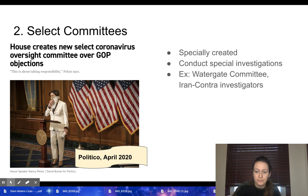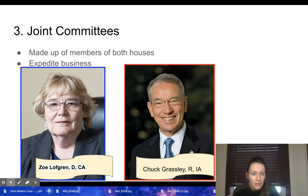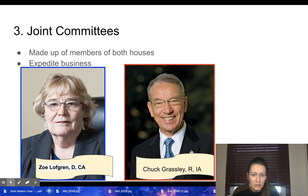We also have joint committees. They are made up of members from both houses for the purpose of coordinating investigations or special studies and to expedite business between the houses. For example, Zoe Loughran, a Democrat from California, heads the Joint Committee on Printing, which oversees what's published in Congress — it's been around since around 1846. Chuck Grassley, the Republican from Iowa, heads the Joint Committee on Taxation.